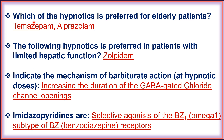The hypnotics preferred for elderly patients are temazepam and alprazolam. The hypnotic preferred in patients with limited hepatic function is zolpidem. If the person has hepatic dysfunction or limited hepatic function, then zolpidem can be preferred.